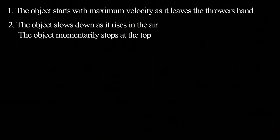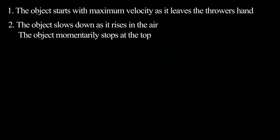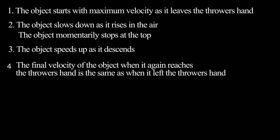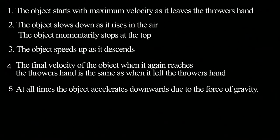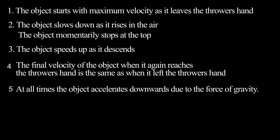The ball will slow down as it rises in the air. The object will reach a certain point and have what we call a momentary stop at the top — that is the point where the ball is not going to return back to the thrower. The object speeds up as it descends. The final velocity when it reaches the thrower's hand again is the same as when it left. At all times, the object accelerates downwards due to the force of gravity, which is what brings the object back to the ground.